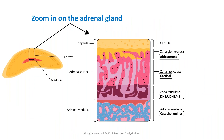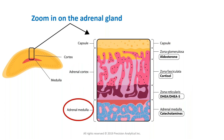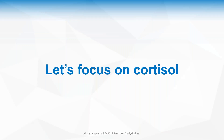Zooming in on the adrenal glands, the adrenal cortex is divided into three sections: the zona glomerulosa produces aldosterone, important for salt-water balance; the zona fasciculata, which we will talk about, is where cortisol is made; and the zona reticularis makes androgens like DHEA and DHEAS. The medulla makes catecholamines — epinephrine and norepinephrine.